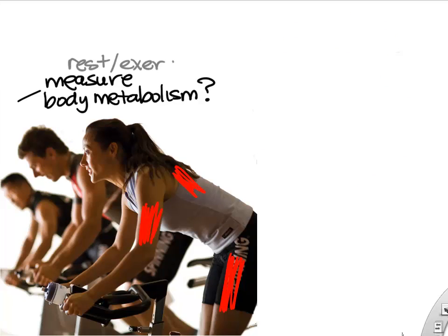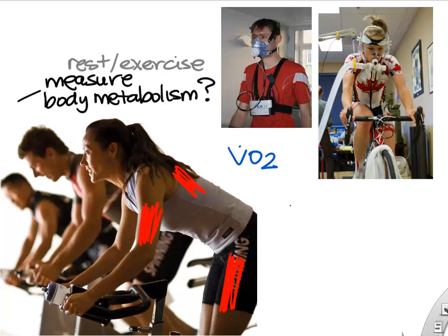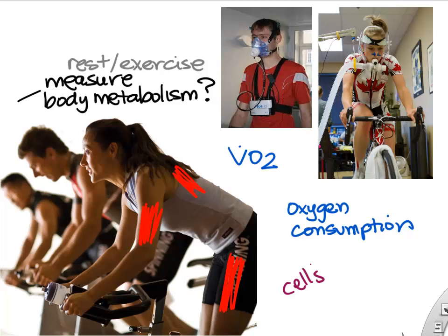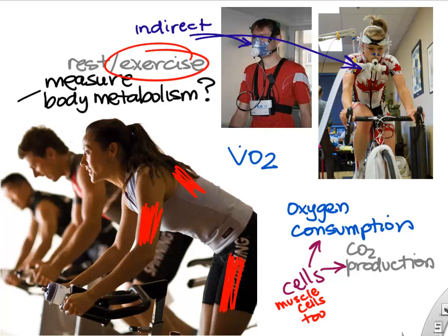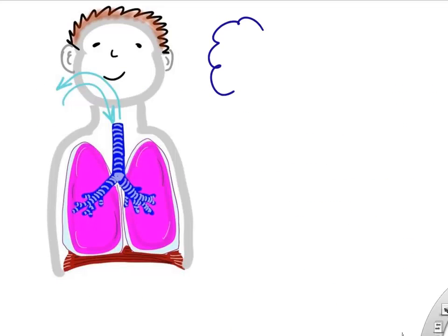This leads to a way that exercise scientists can measure your body metabolism at rest and during exercise. They can measure something called VO2, or oxygen consumption, which represents all the oxygen consumption of the cells of your body. You can also measure CO2 production using a mask at your mouth to measure what you're breathing in and out. When you exercise, most of those active cells are skeletal myocytes.